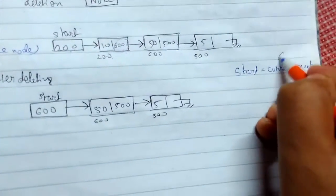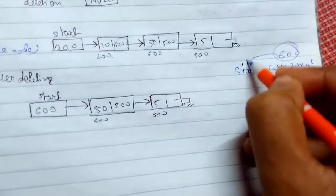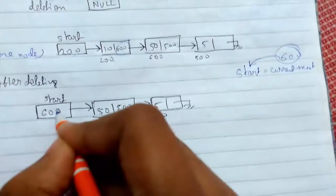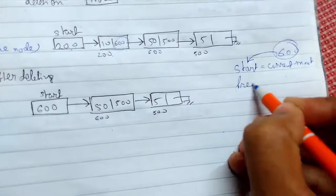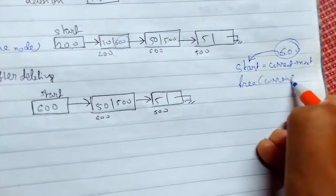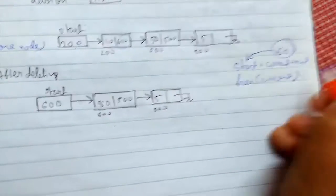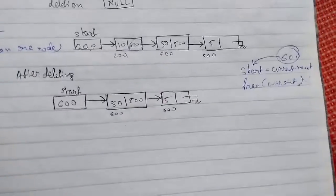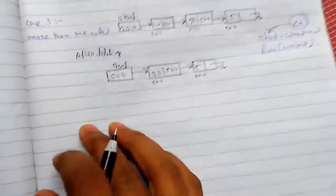So we are storing 600 directly here. So this gets stored here and after that if we free current, the space will be removed. Let me show you how to write the code for it.